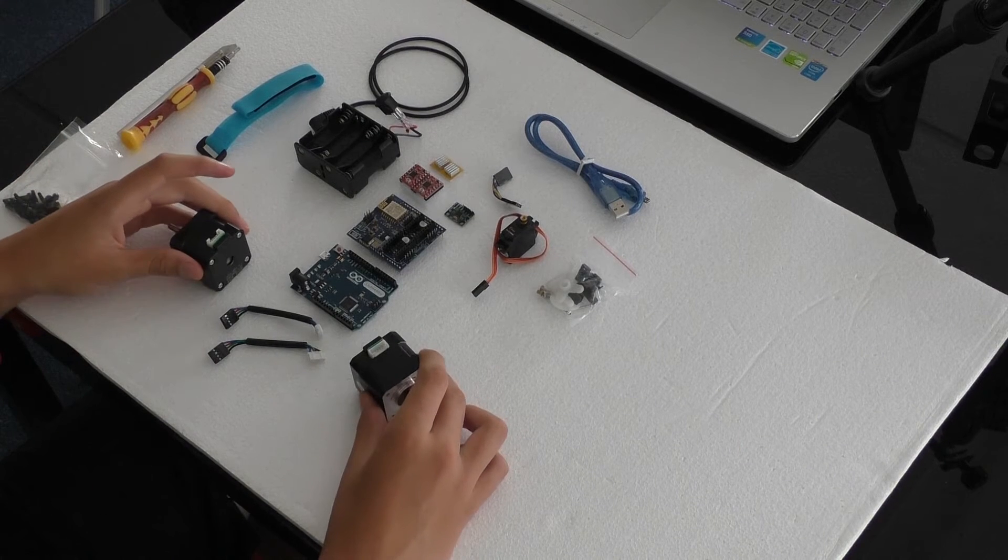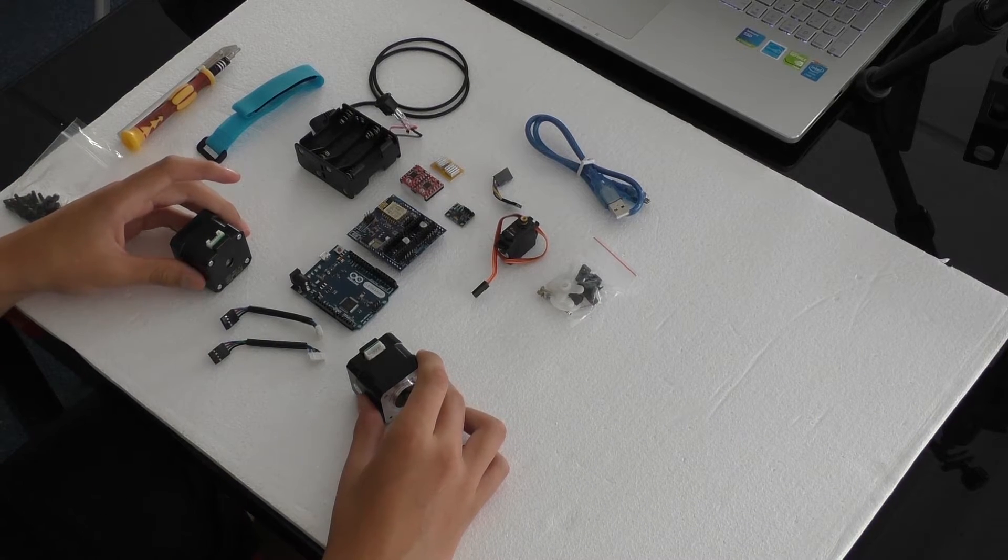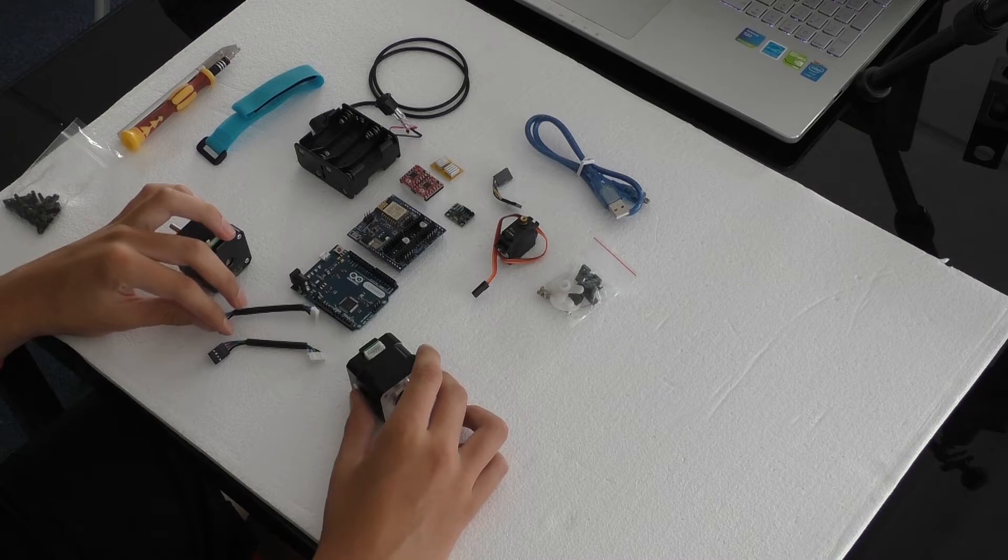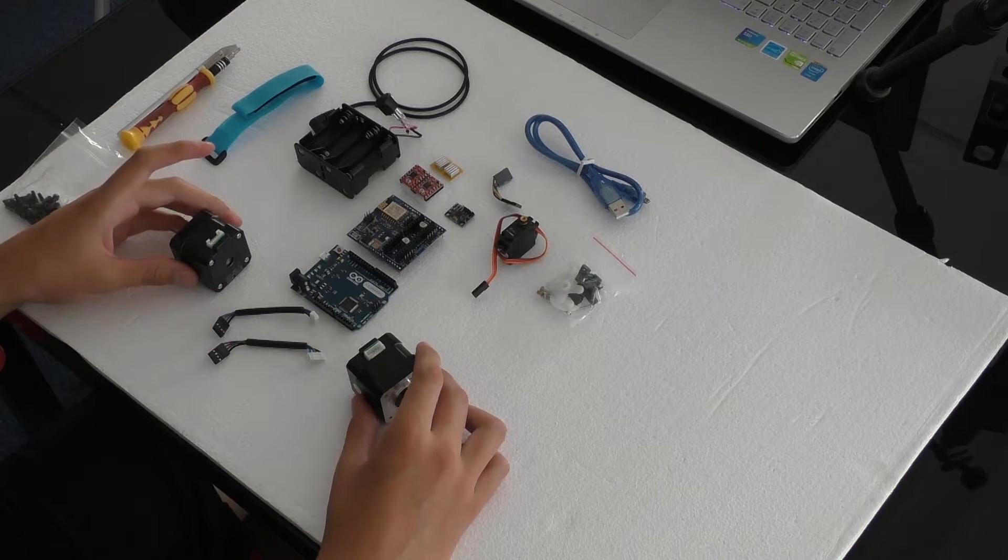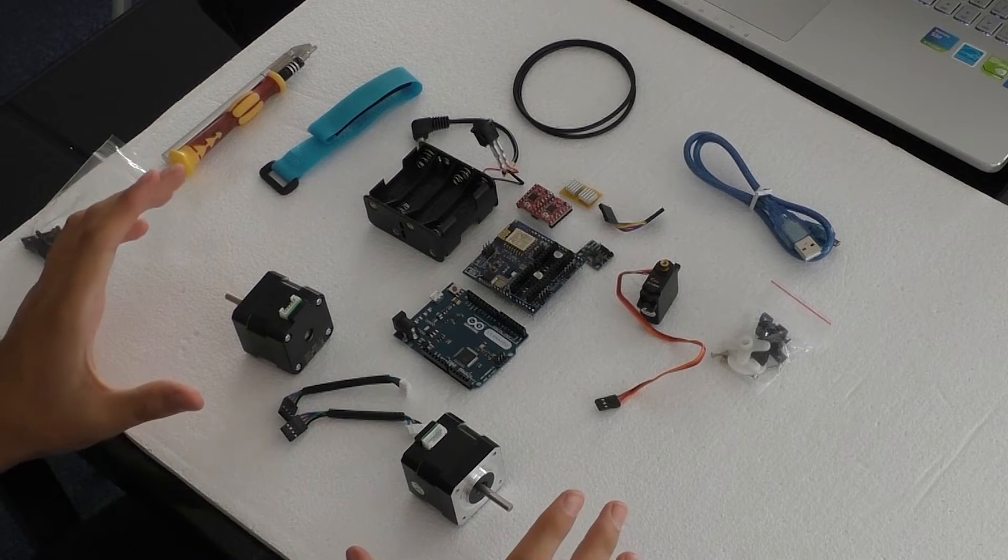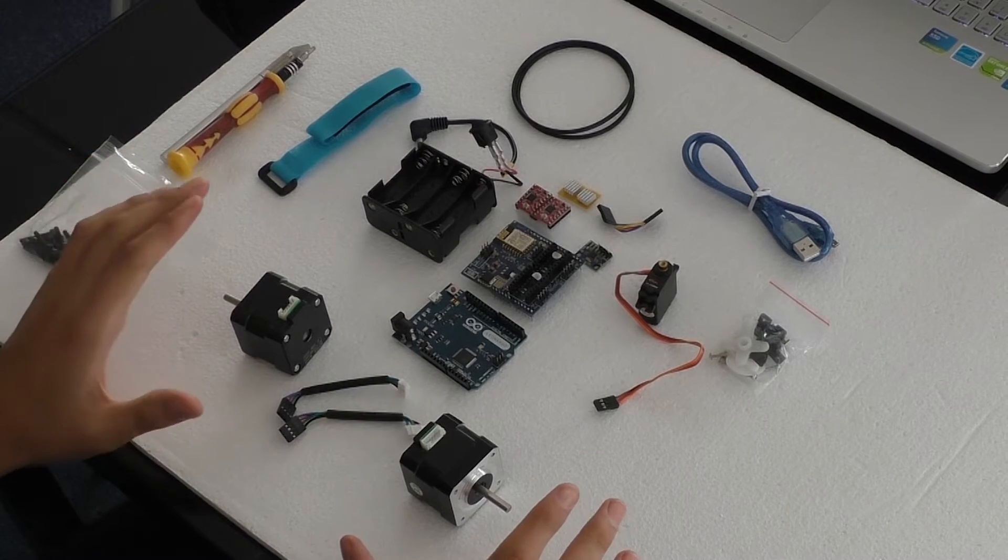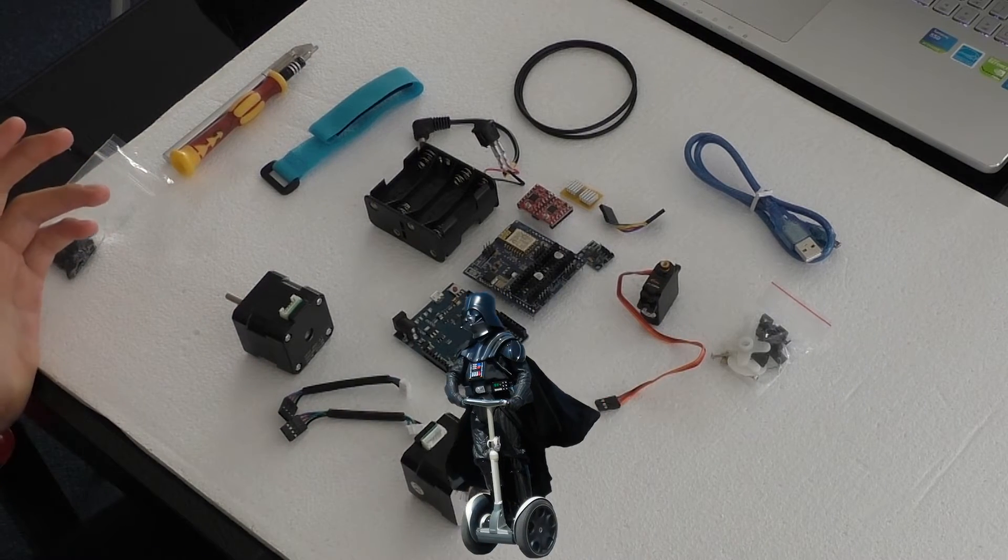Alright, so I've unpacked everything and now I'm going to assemble all of the electronic components and go through what each part is. This is the Balanced Spot project, already programmed and ready to go, similar to a Segway.